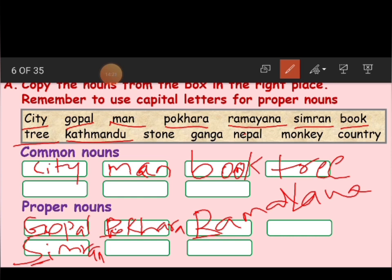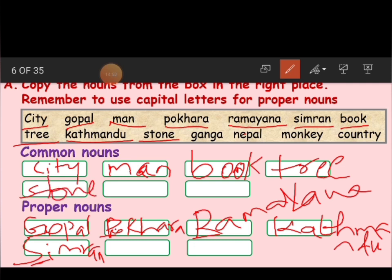Now we have to copy sentences and use capital letters for proper nouns. First sentence: 'He lives in a small town named Janakpur.' The name here is Janakpur — that must be written with a capital J. Second sentence: 'He comes from Beijing. It is the capital of China.' Here we have two names — Beijing and China. Because these are names of places, they must be written with capital letters.